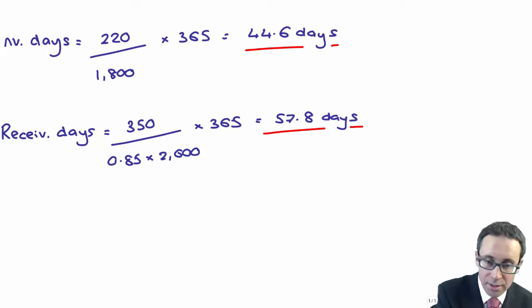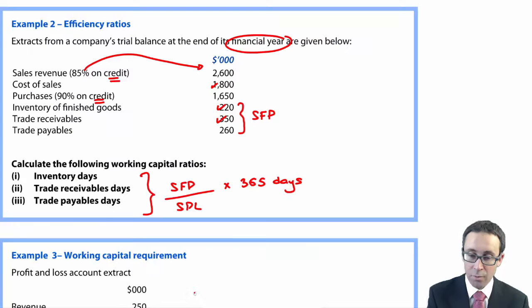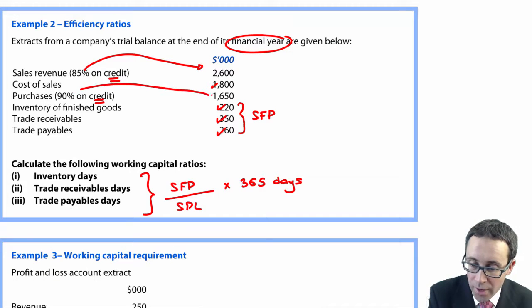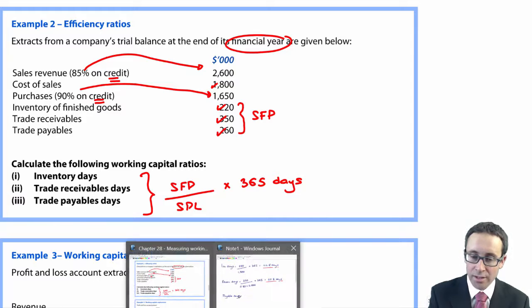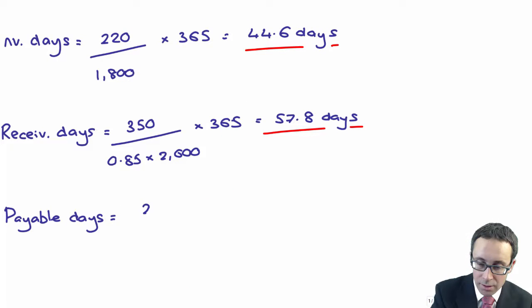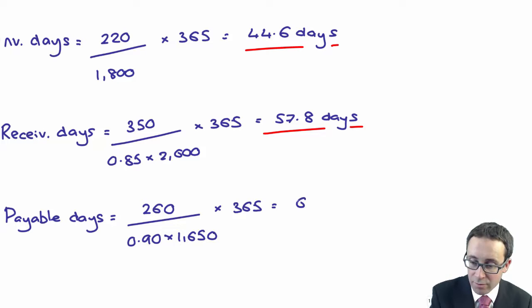Last but by no means least is looking at your payable days. Your payable days take your payables, which we have there at 260, and it's dividing it by your credit purchases, of which our total purchases were 1,650 and our credit are 90% of them. So 260 divided by 90% of 1,650, multiply by 365, gives me 63.9 days.